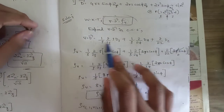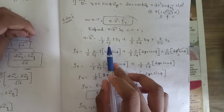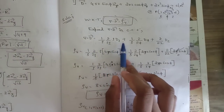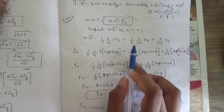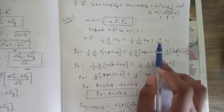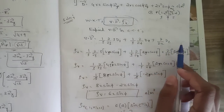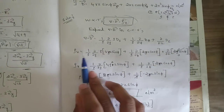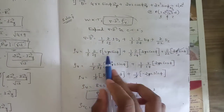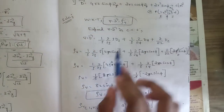In the cylindrical coordinate system, the divergence formula is: del·D = (1/ρ)(∂/∂ρ)(ρ Dρ) + (1/ρ)(∂/∂φ)(Dφ) + ∂/∂z (Dz). Substituting Dρ = 4ρz sinφ, Dφ = 2ρz cosφ, and Dz = 2ρ² sinφ into this formula.